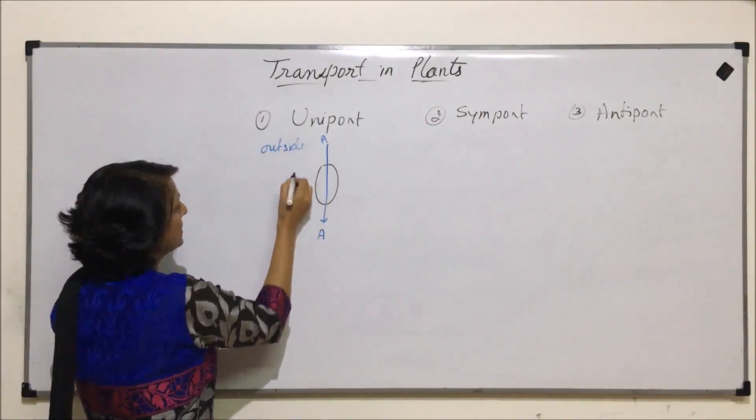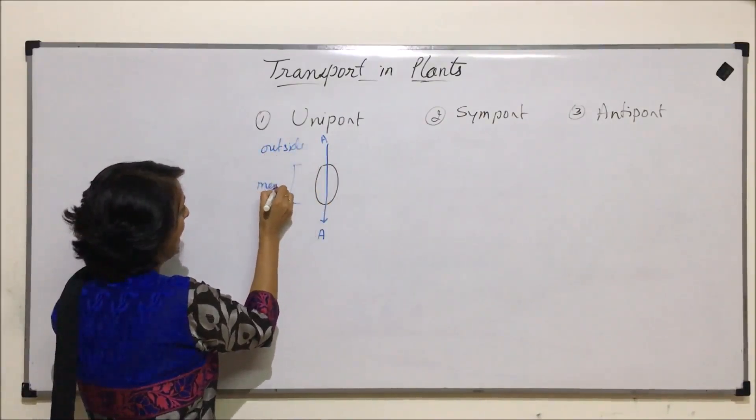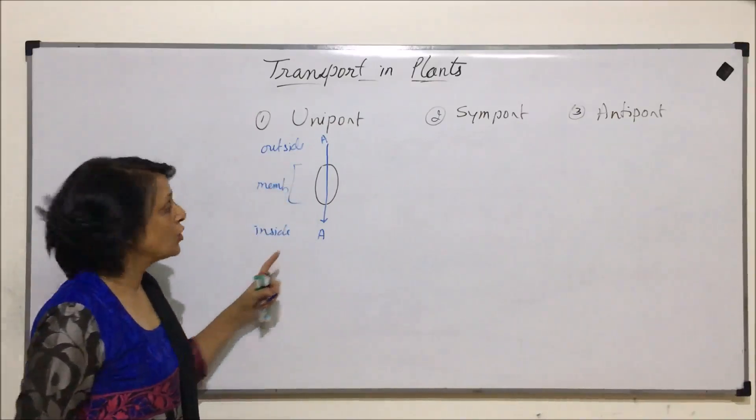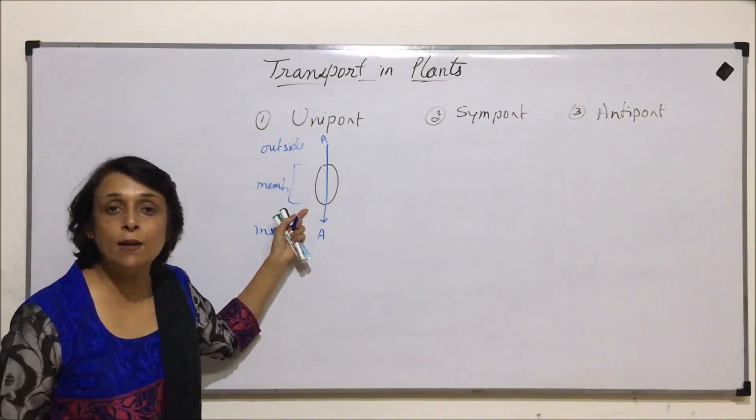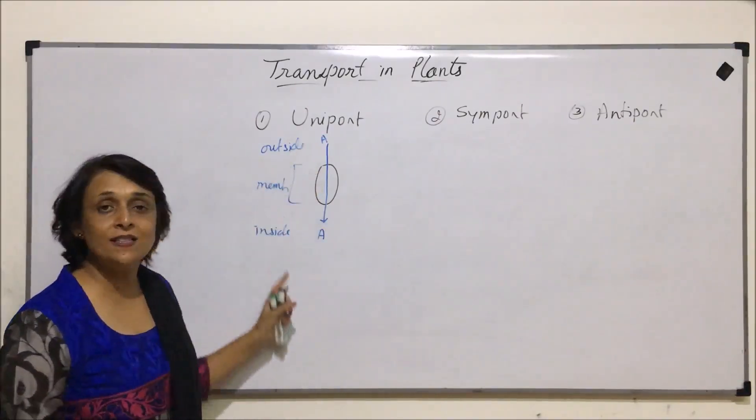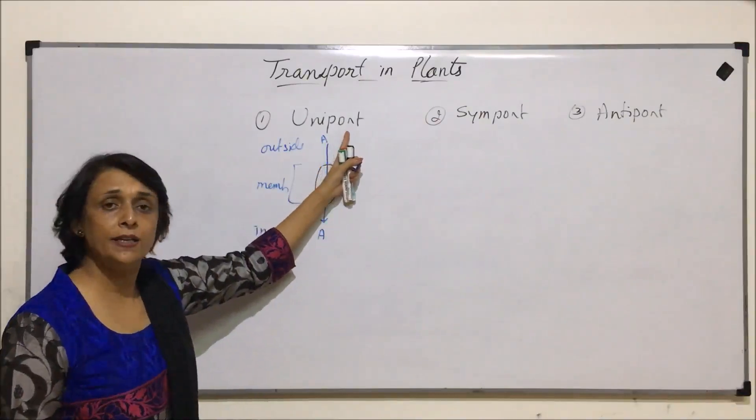This is outside, this is the part of the membrane, and this is inside of the cell. So if a protein is helping in unidirectional transport of one substance, then we will call it uniport.